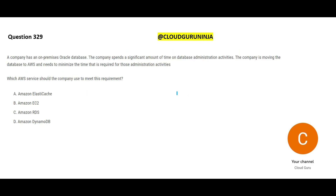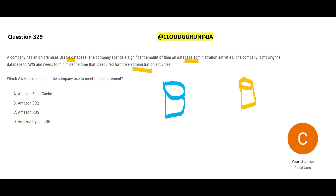In this next question, you have a database on premises and they are telling you to move to cloud, which means in cloud also you will have to create an Oracle database. Now Oracle is a relational database. Their pain point is that the database administration effort should be reduced. If they had not mentioned that, I would have told you to just put this database on an EC2 instance. But if you put it on EC2, your administration effort is high because it is not auto-managed — you have to do patch installs and all housekeeping work yourself.